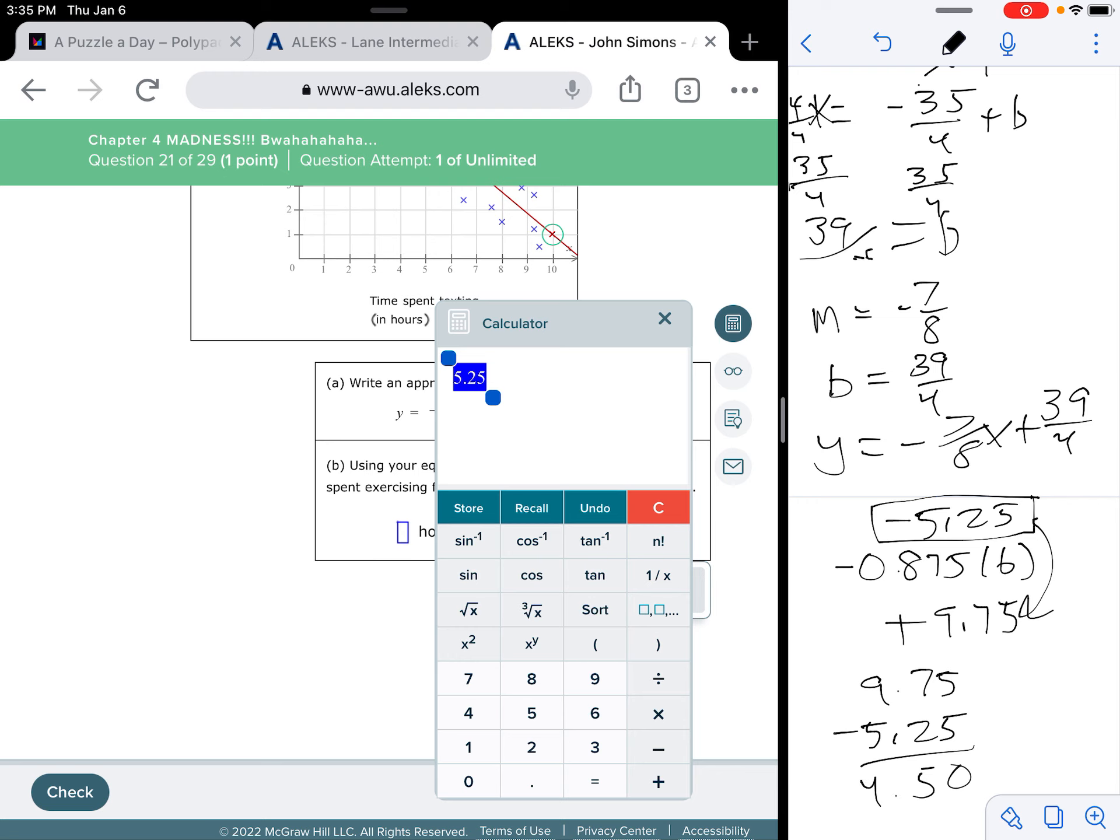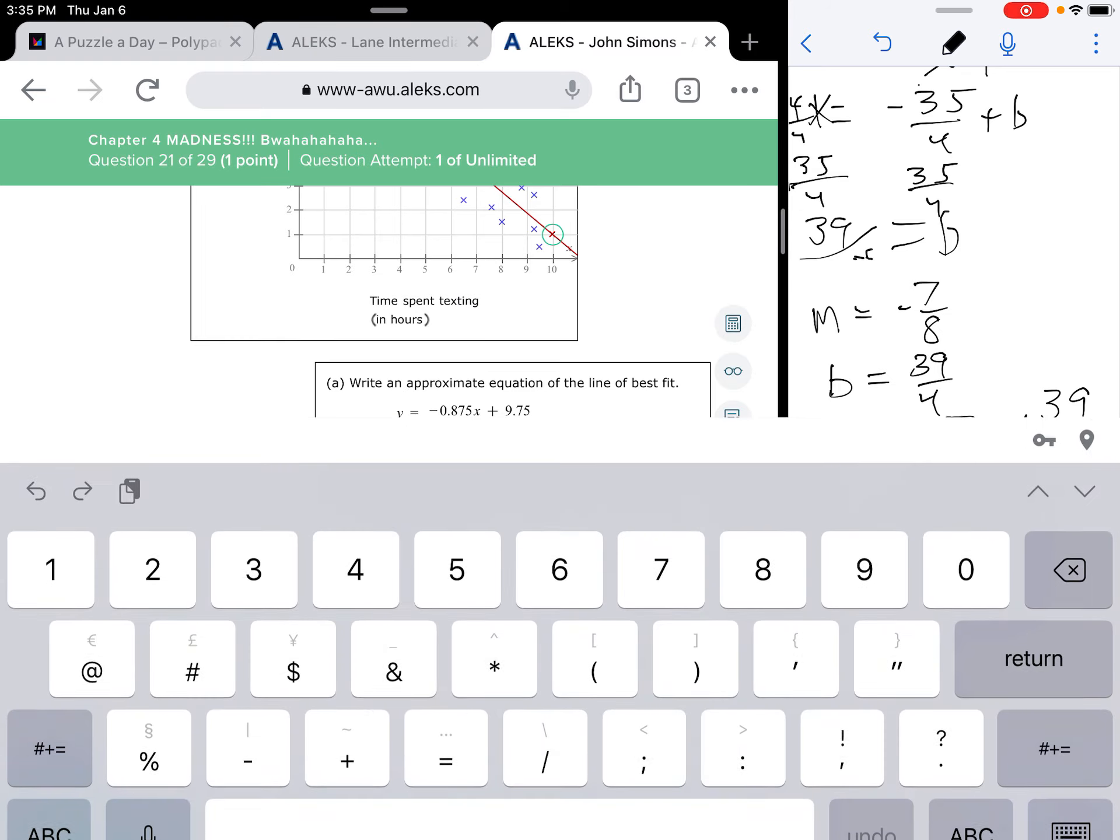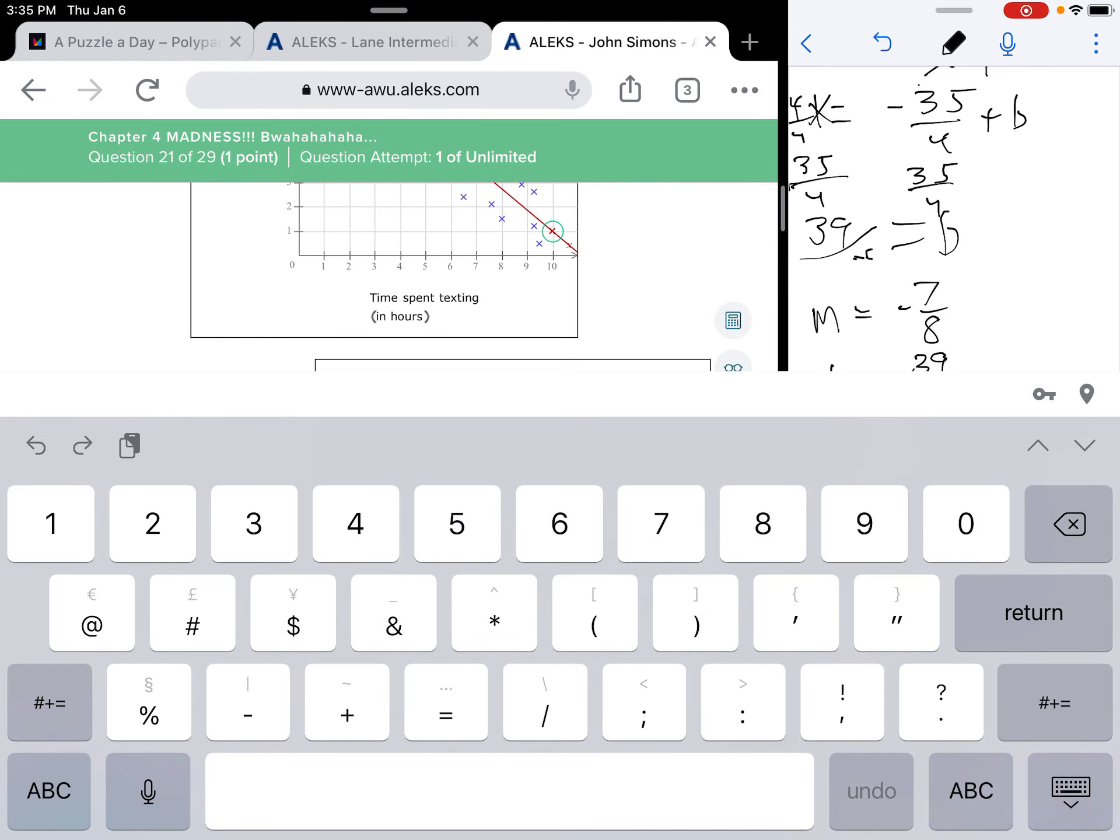So, we have 9.75 minus 5.25. So, that's going to give me 4.50. So, that worked out kind of nicely. Worked out more nicely than I thought it was going to.